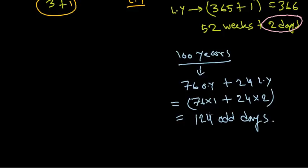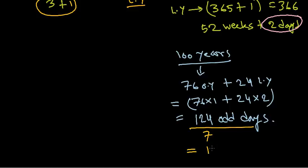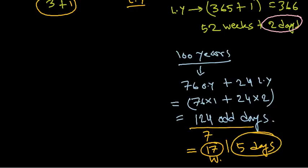Now we can't call 124 the number of odd days directly, because an odd day count must be less than 7 — if it's 7 or more, those form additional complete weeks. So we divide 124 by 7, which gives 17 weeks and 5 days left over.